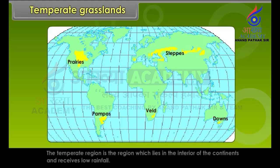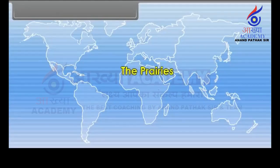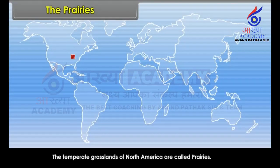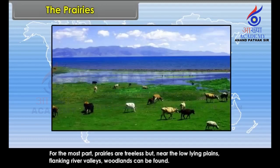The Temperate Region is the region which lies in the interior of the continents and receives low rainfall. The Temperate Grasslands of North America are called Prairies. For the most part, Prairies are treeless.